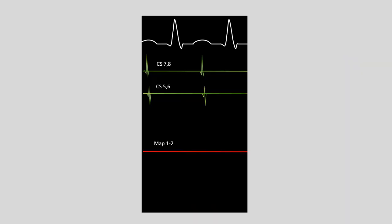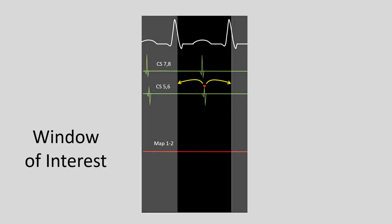Let's review why that happens and talk about a window of interest. This is what the mapper sees as that 3D map and color coding is being constructed. You're going to have gating of the electrograms to the surface ECG. We pick a reference electrogram — in this case CS5-6 — and we need to decide on a window of interest. That means the electrograms that fall in this window are the ones we're including in the map. Usually people pick a symmetrical window of interest surrounding the reference electrogram, against which all local activation times are compared.